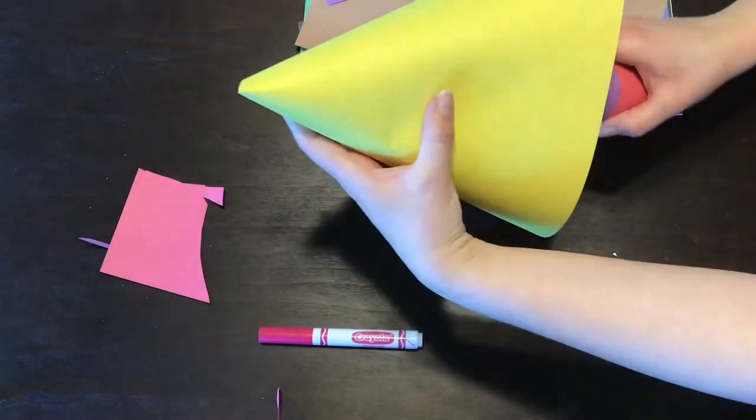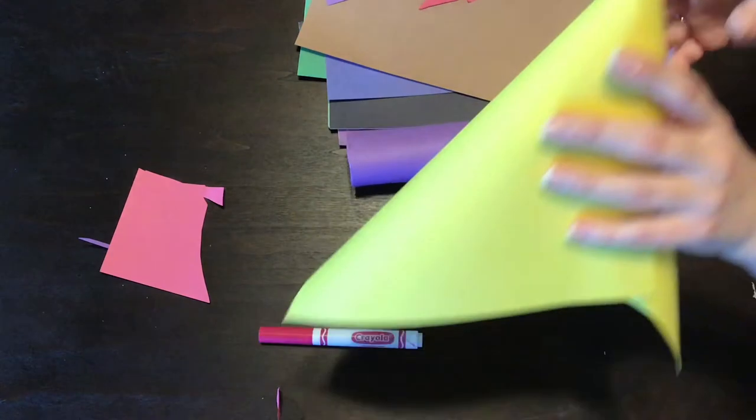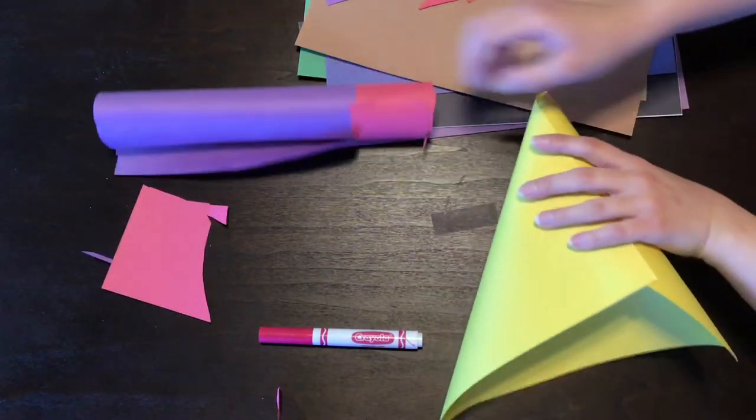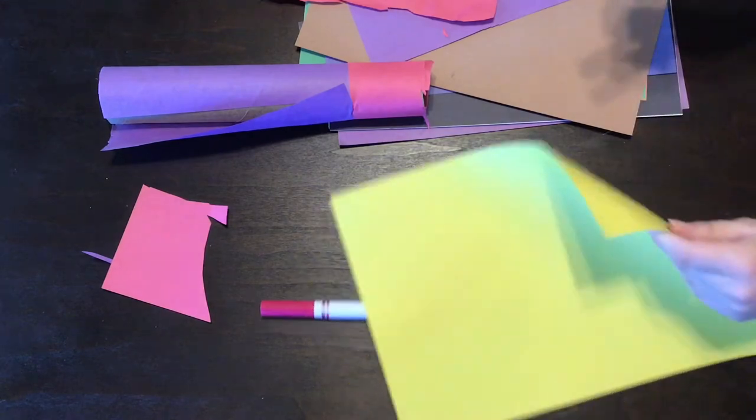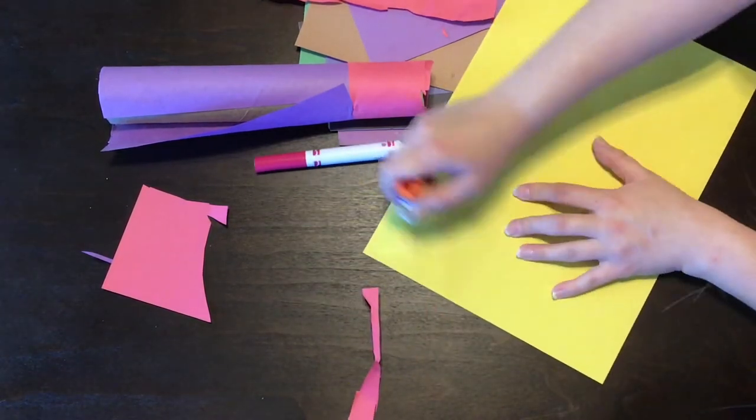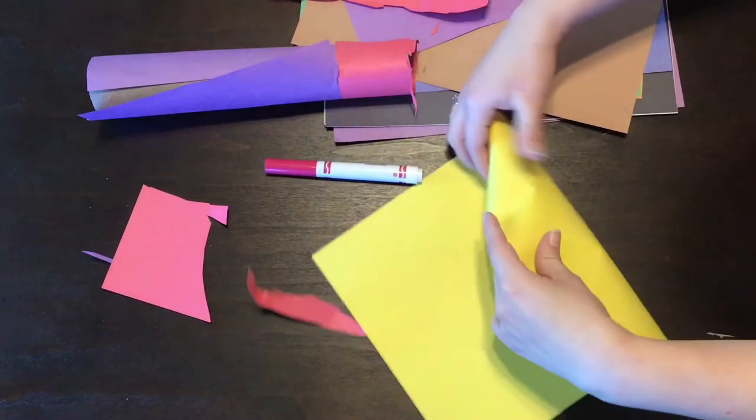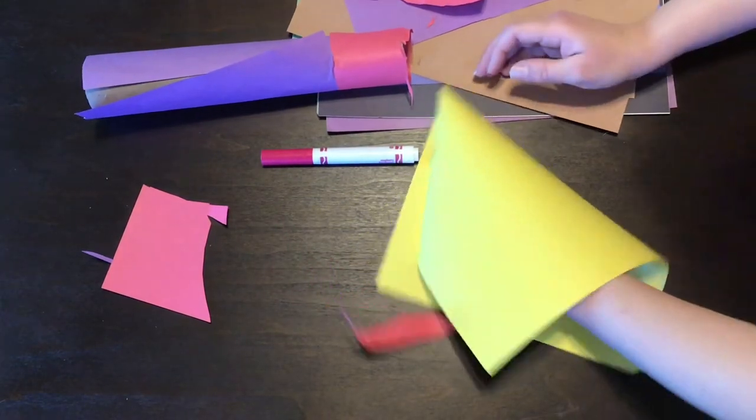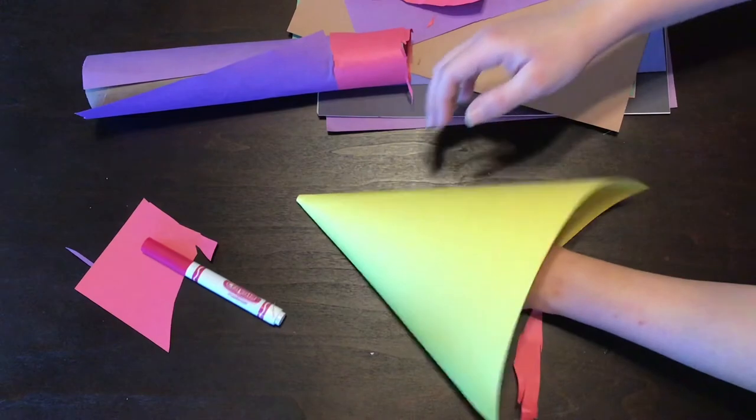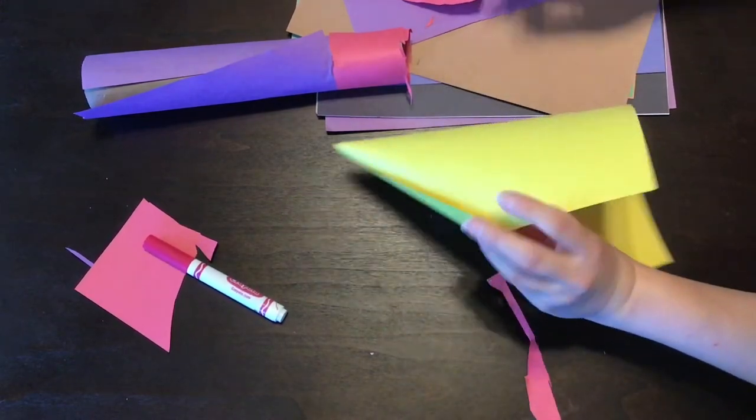It's a bit too big right now. So what I'm going to do is I'm going to glue this part together and then we'll trim it. It's glued. I'm gonna roll it. There we go.